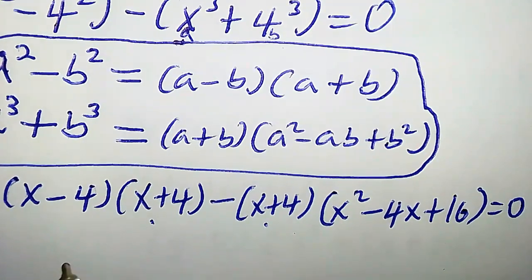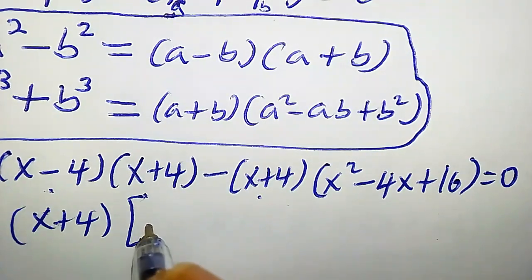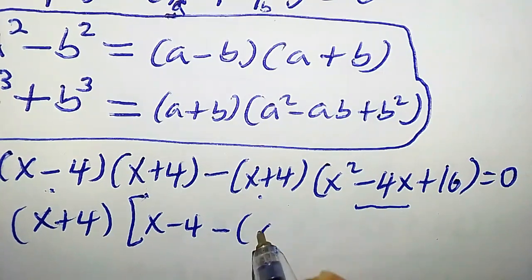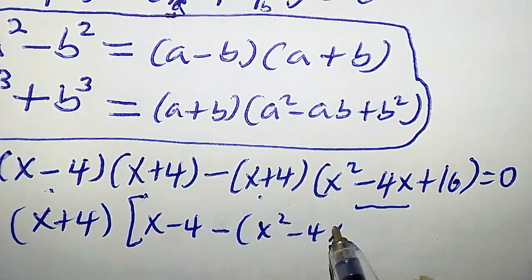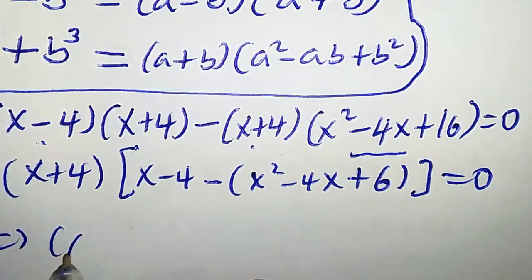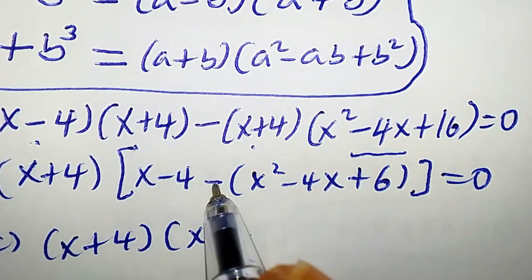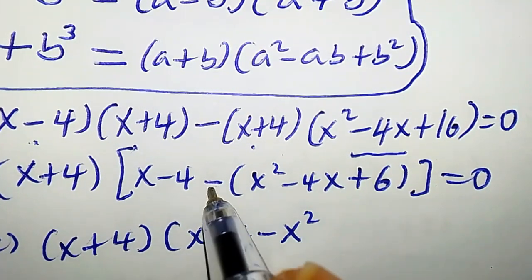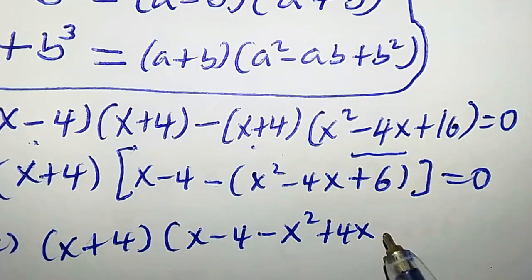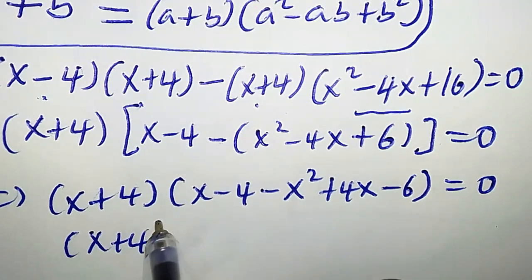Let's proceed further, equals zero. Clearly x plus 4 is the common factor here. We can pull it out, so we're going to have x plus 4 times (x minus 4 minus (x squared minus 4x plus 16)) equals zero.